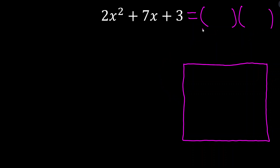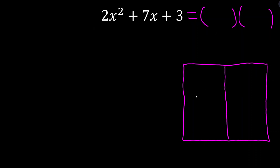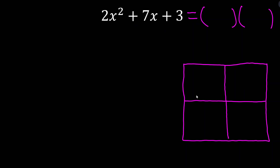We're trying to find these two side lengths. We know the area: 2x² + 7x + 3. Typically what we do is break up this rectangle so that we have four sub-rectangles, and we know that the sum of these areas has to add together to equal the total area, which is 2x² + 7x + 3.